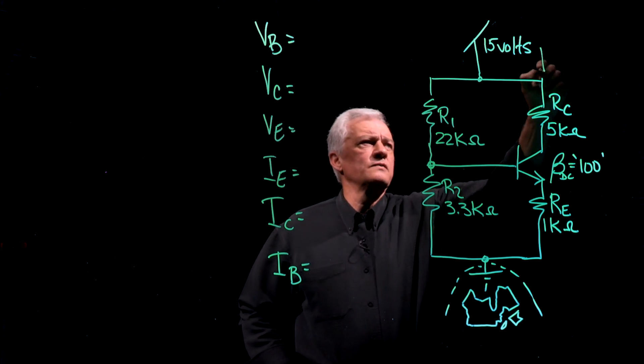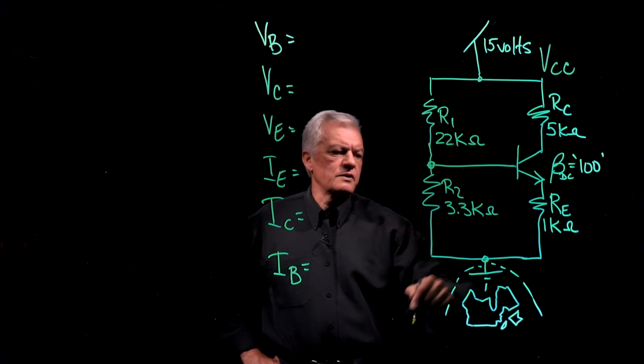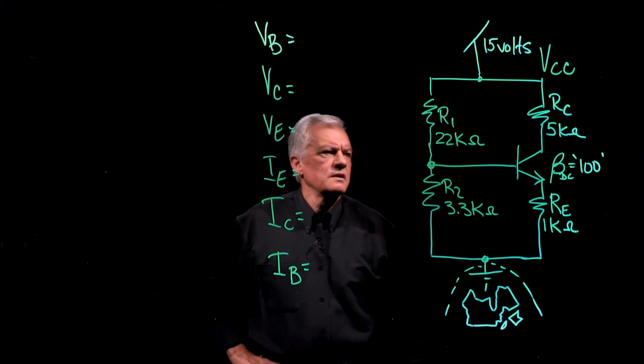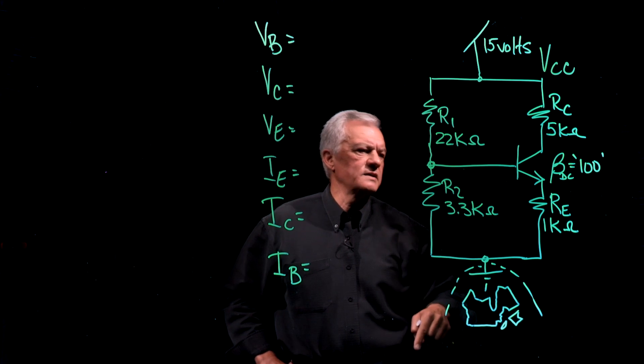As mentioned before, VCC in this case here is 15 volts. There's our earth reference point. We're going to drop all that pressure across this circuit: collector, emitter resistor, and biasing resistors.